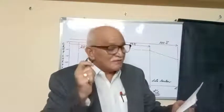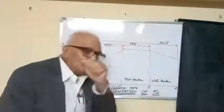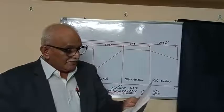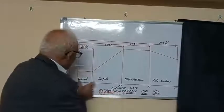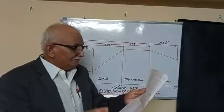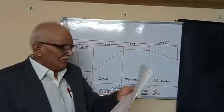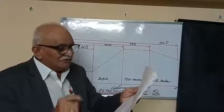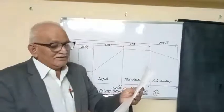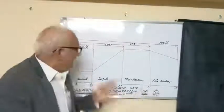Each crop will have a specific set of crop coefficients for the initial, rapid, mid-season, and late-season stages. The length of each of these stages depends on climate, latitude, elevation, planting date, crop type, and cultural practices. Local field observations are best for determining the growth stage of the crop and adjusting the empirical KC values accordingly.